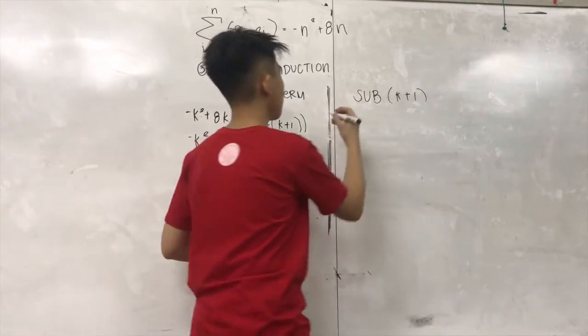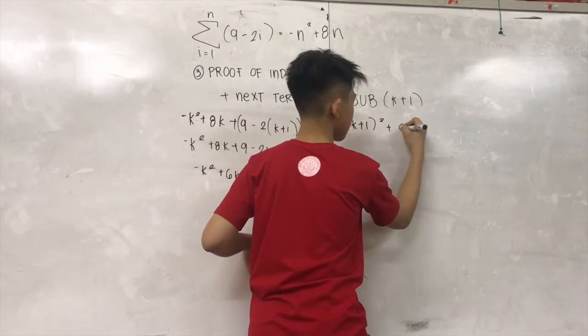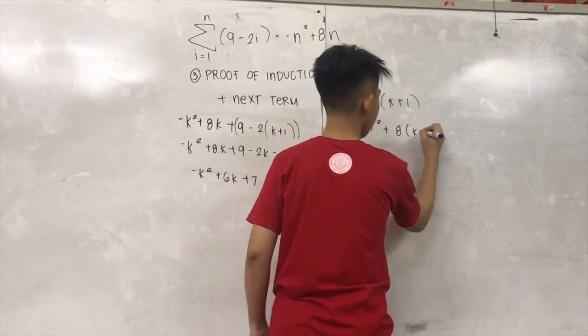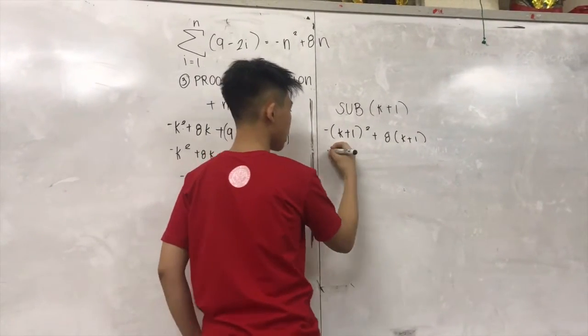So, negative K squared plus 8K plus 1. So, we will expand this one.